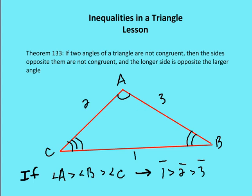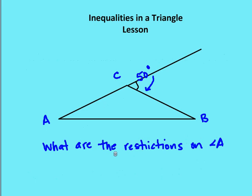Let's take a look at some quick practice problems. What are the restrictions on angle A? You can pause and come back. The answer: angle A has to be greater than zero degrees — otherwise it would not be an angle. And it has to be less than 50 degrees, because the sum of the remote interior angles equals the exterior angle of 50 degrees. So angle A must be between zero and 50 degrees — less than the exterior angle but greater than zero.